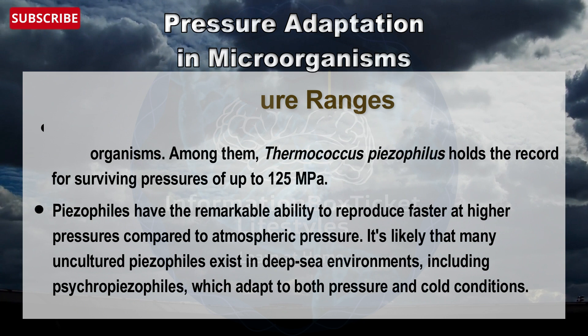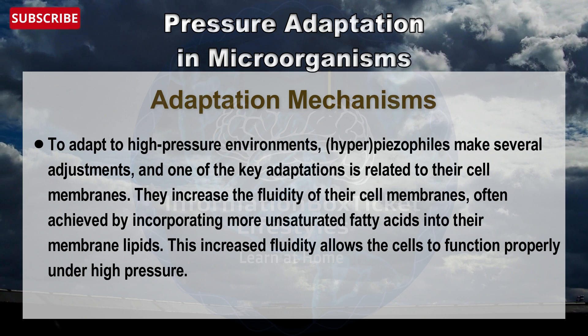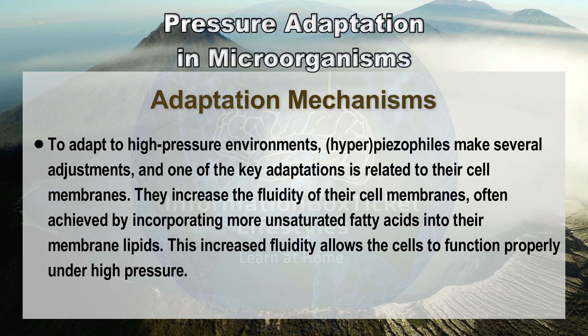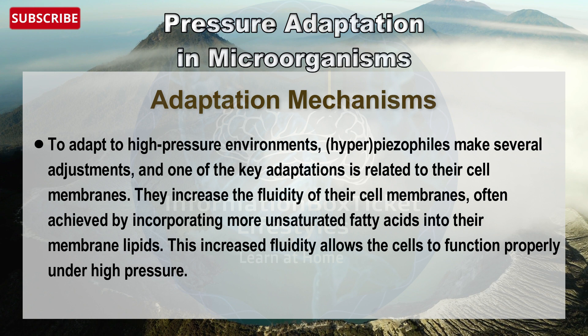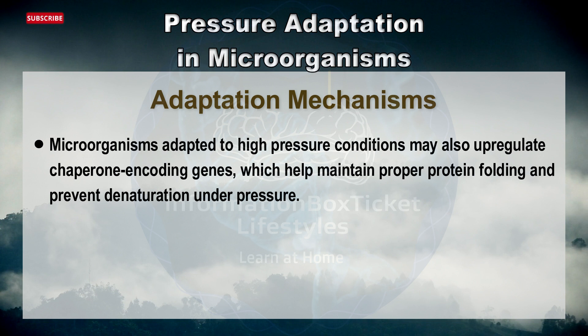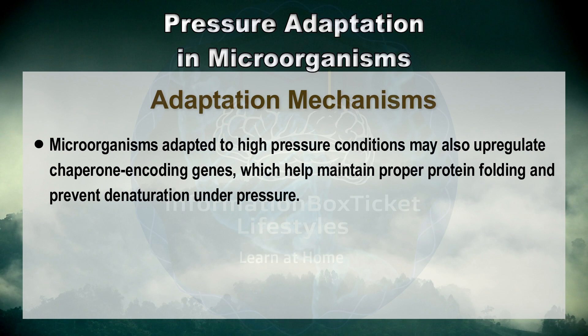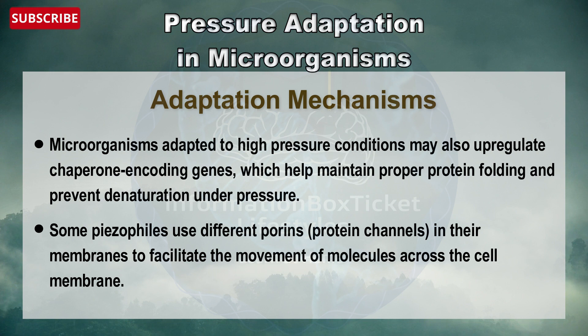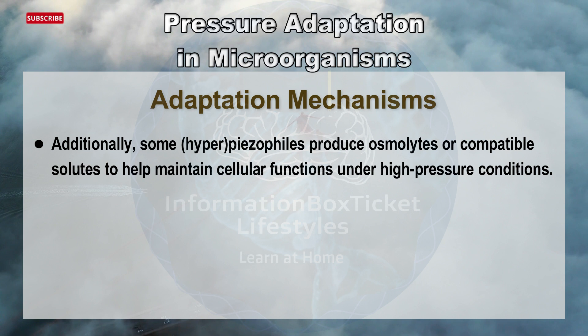To adapt to high pressure environments, hyper-piezophiles make several adjustments. One key adaptation is increasing the fluidity of their cell membranes by incorporating more unsaturated fatty acids into membrane lipids, allowing the cell to function properly under high pressure. Microorganisms adapted to high pressure may also up-regulate chaperone-encoding genes to maintain proper protein folding and prevent denaturation. Some piezophiles use different protein channels in their membranes to facilitate molecular movement, and some hyper-piezophiles produce osmolytes or compatible solutes to help maintain cellular functions under high pressure.